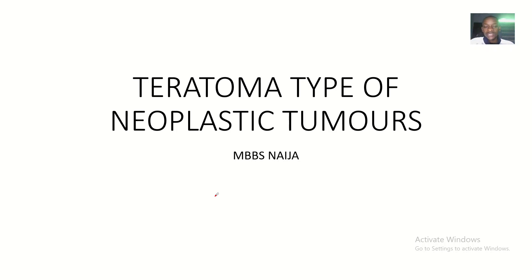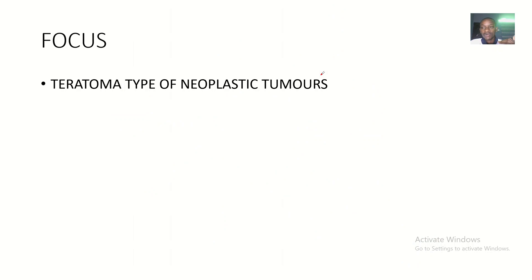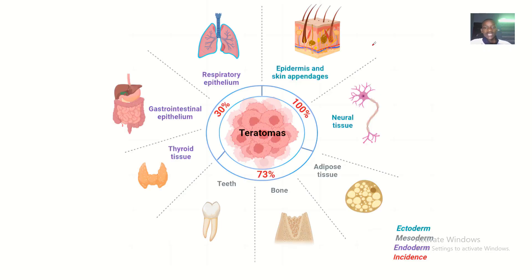We'll be looking in depth at the concept of teratomas. As we're talking about neoplasms, it's good to look at each of the terminologies we're likely to see frequently in the course of studying this subject. So we're looking at teratoma — if a tumor cell is classified as teratomatous, what does it mean? What are the criteria that make a tumor cell be called a teratoma? Teratomas are tumors that could be of ectodermal, mesodermal, or endodermal origin.